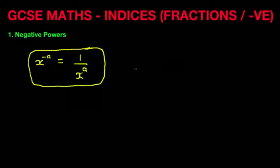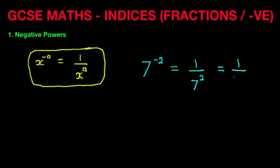Let's run through a simple example. Suppose we have 7 to the power of minus 2. Using our rule, that becomes 1 over 7 to the power of 2. And now we can answer the question: 1 over 49, since 7 squared is 49. So 7 to the power of minus 2 equals 1 over 49. Please don't forget this very simple rule.